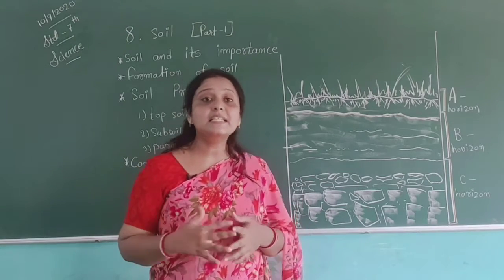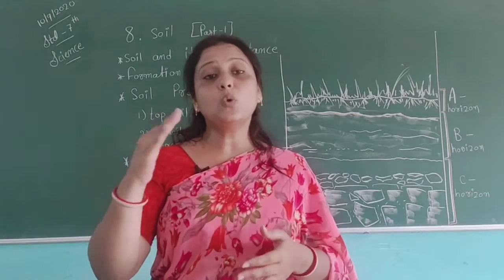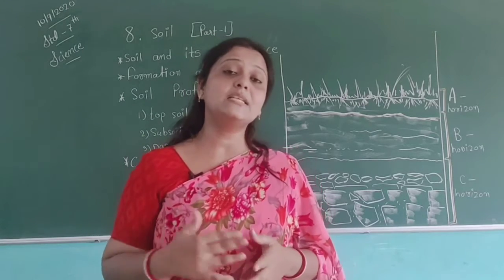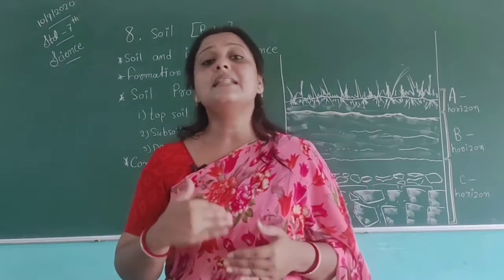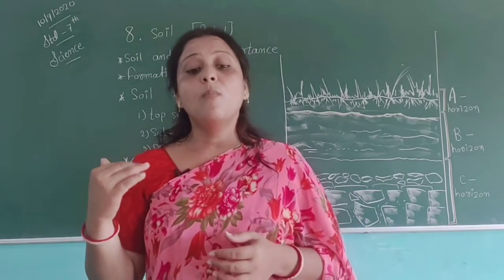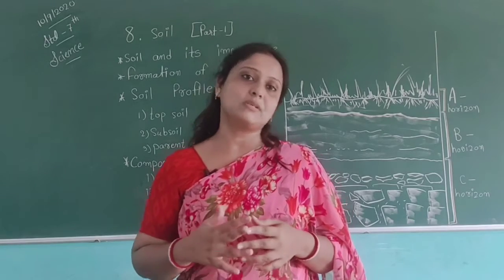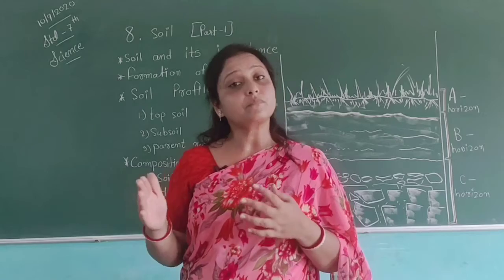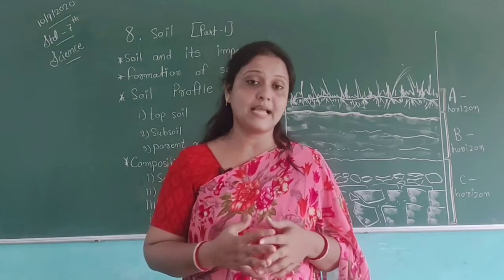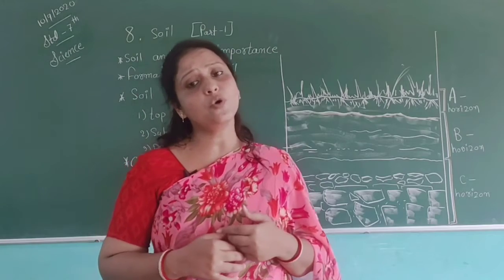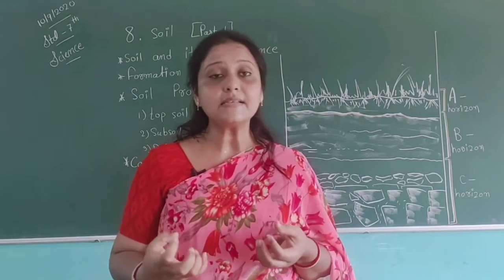Subsoil is also known as B horizon. The layer below the topsoil is called the subsoil. It is lighter in color than the topsoil. It is usually harder and more compact than the topsoil. It is rich in soluble minerals and iron oxides. It has very little humus compared to topsoil. Rainwater collects in this layer.